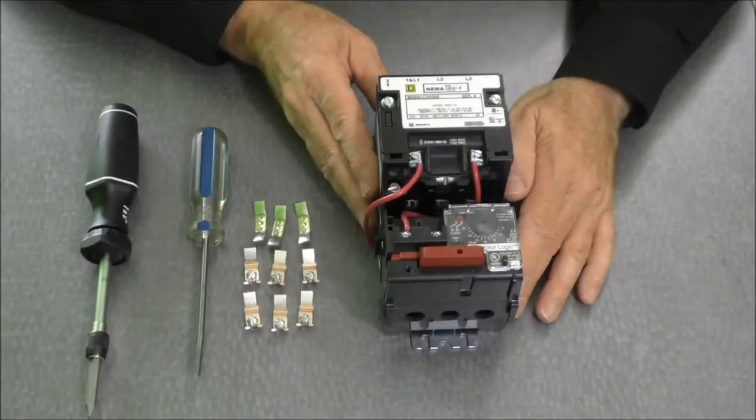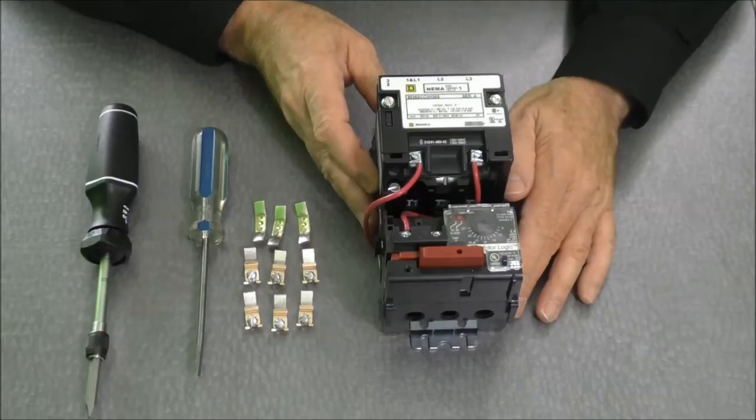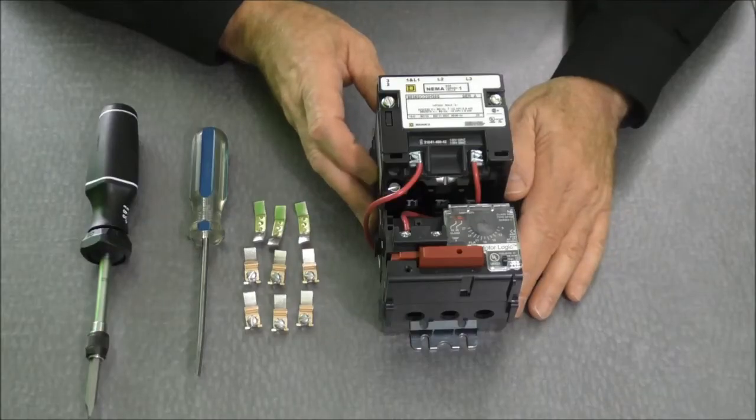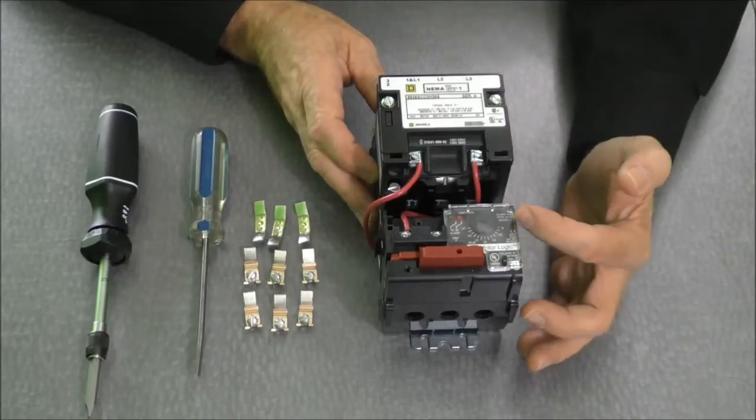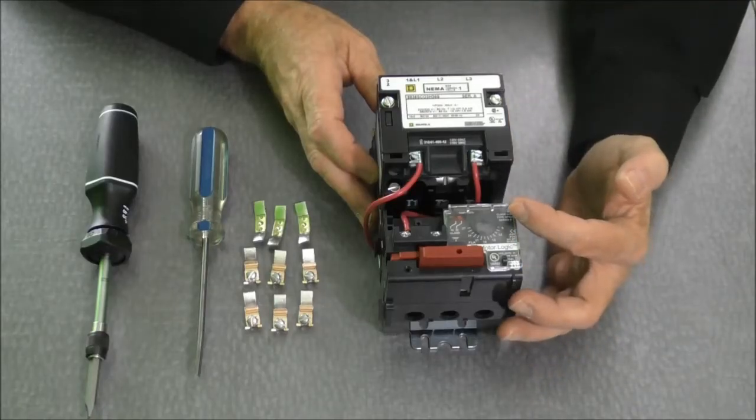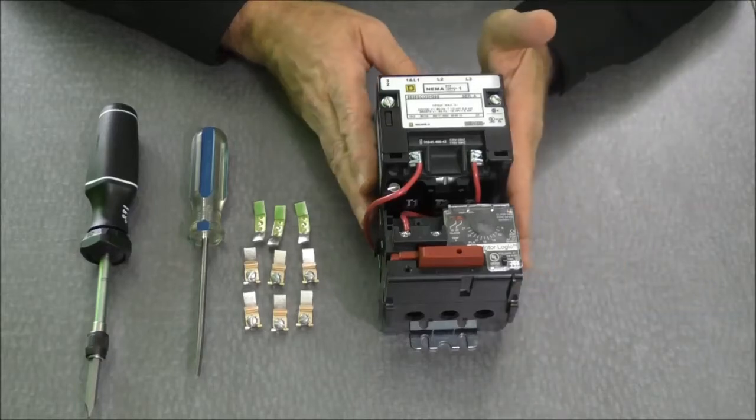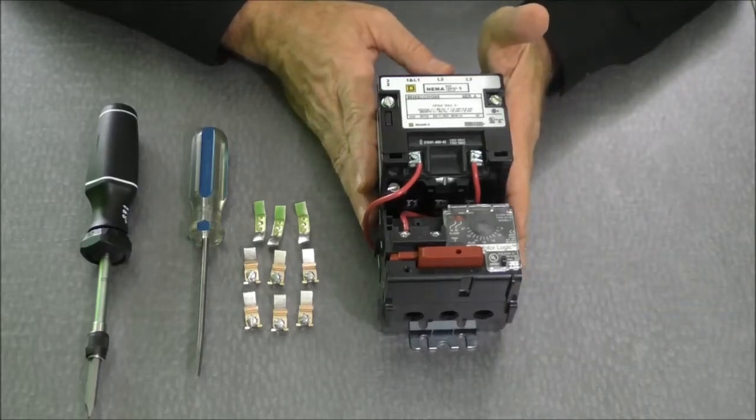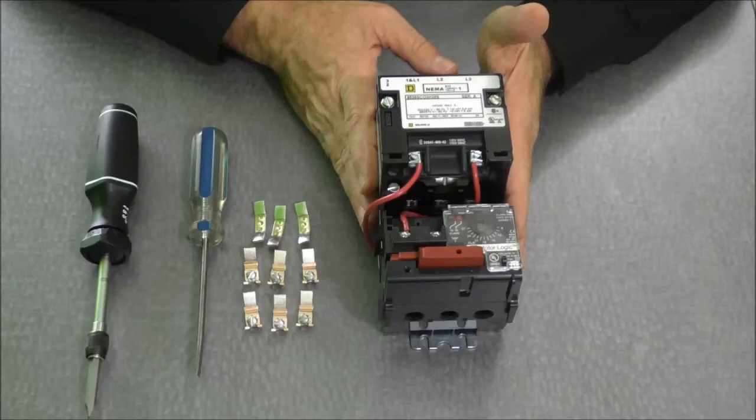I have before me a Square D Type S NEMA size 1 starter with a solid state overload relay. We refer to that as our motor logic solid state overload relay. I want to demonstrate changing the contacts in the starter itself.